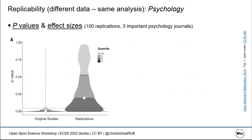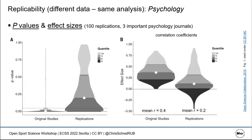A large replication attempt in psychology conducted 100 replications of highly cited published studies. The original studies reported a mean correlation effect size of 0.4; replications found only half that size on average. P-value distributions also shifted substantially, indicating that replicability in these instances was poor.